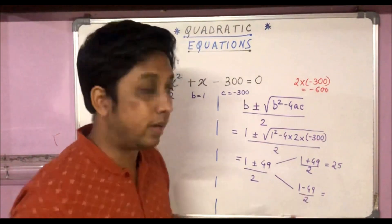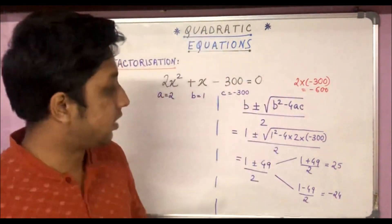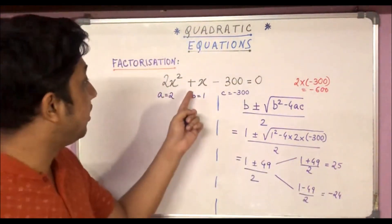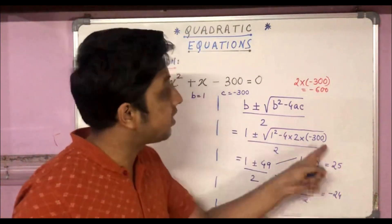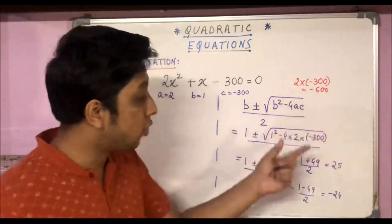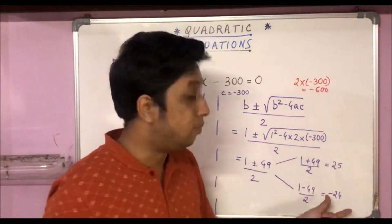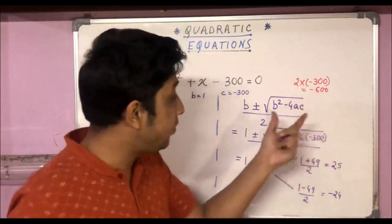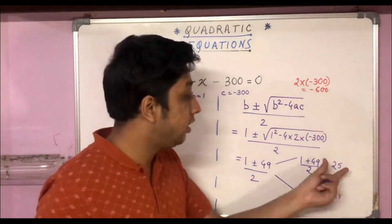And 1 - 49 by 2 is -48 by 2, that is -24. Now let's test: if we add these two, do we get plus 1? Yes, 25 - 24 is 1. And if we multiply them, do we get -600? If we multiply 25 and -24, we actually get -600. That means this technique to find the middle-term break actually works.